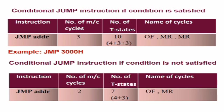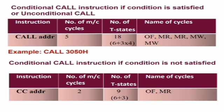We have already seen the conditional CALL instruction: if the condition is true it will behave as a normal unconditional CALL instruction, in which case the number of machine cycles are 5 and the number of T states required are 18. Now, similar to the jump instruction, if the conditional CALL fails — for example, if we have CALL if carry and the carry flag is not set — in that particular case it will require only two machine cycles: one is opcode fetch and one is memory read. Because while performing the memory read it will check the carry flag, and if the condition is false it will not go for the remaining machine cycles.